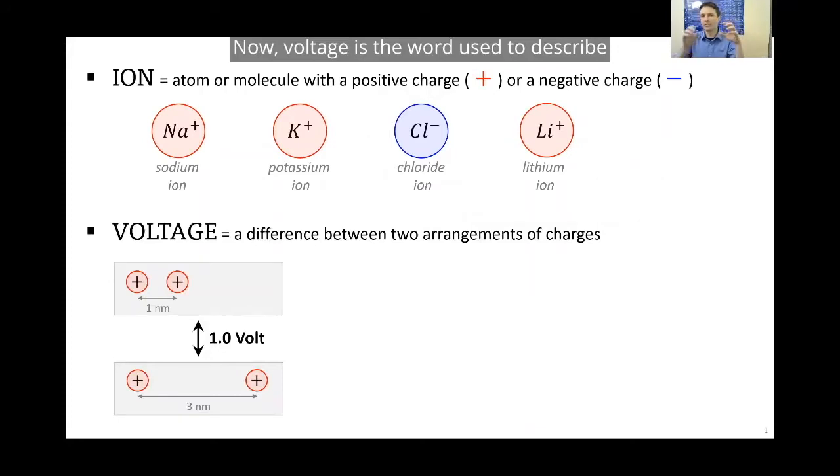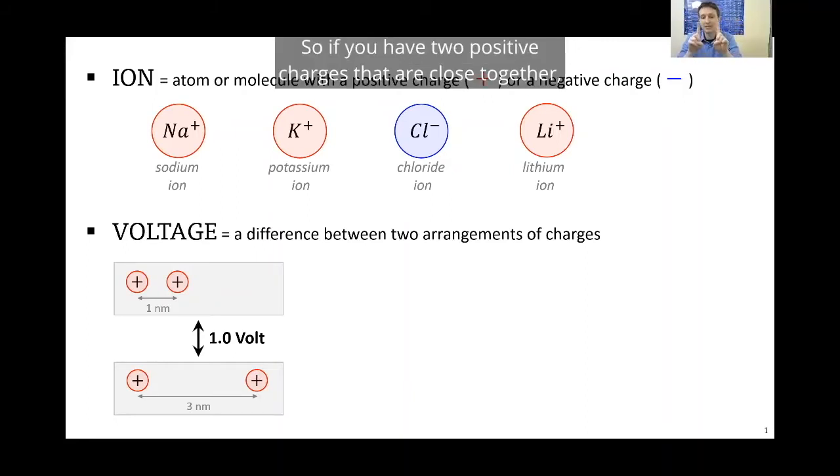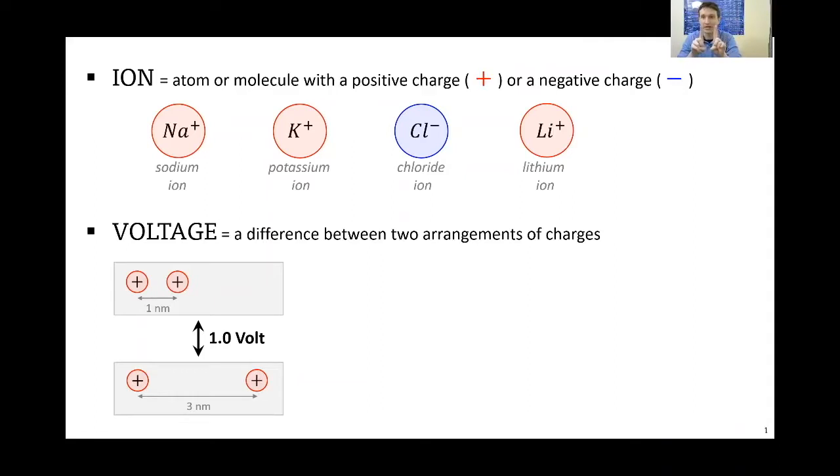Voltage is the word used to describe different configurations of charges because like charges repel. So if you have two positive charges that are close together and then they move apart, that's different. One's higher energy, one's lower energy. And scientists like a word to describe how those configurations of charges are different, and that word is voltage. It happens to be for things like two protons or two sodium ions moving from about one nanometer apart—tiny, tiny distance—to three nanometers apart is about one volt.